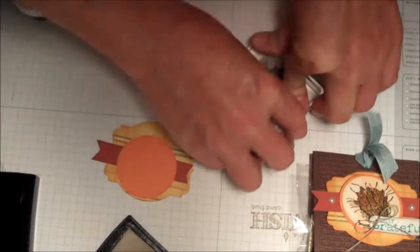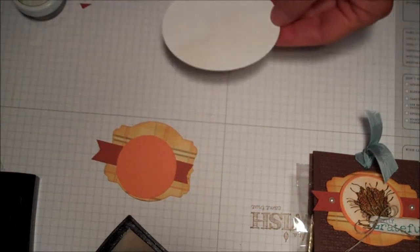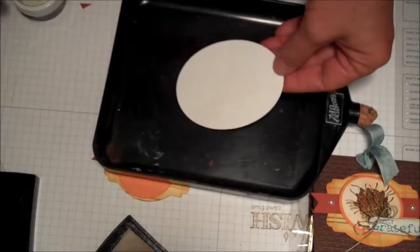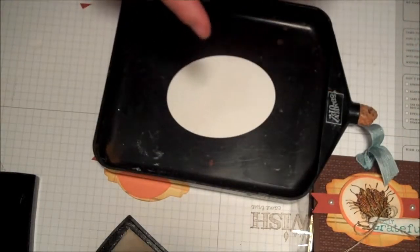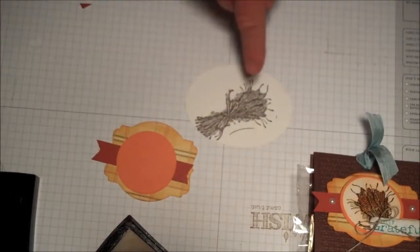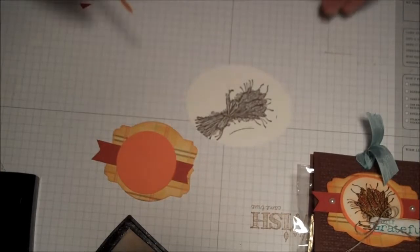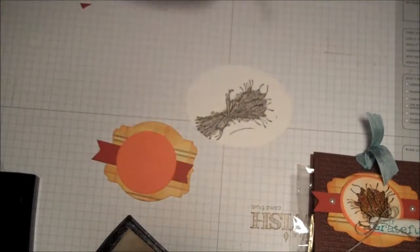I'm just going to stamp it, and you notice I'm not really caring where I'm stamping because I'm going to punch it out. Here is my little holder. Now see that little line right there? That's because I allowed my stamp to wiggle off. I stamped kind of sideways, I didn't go straight up and straight down.